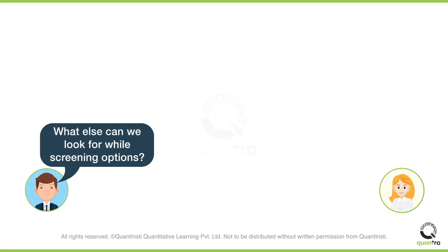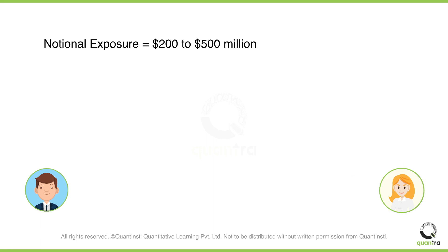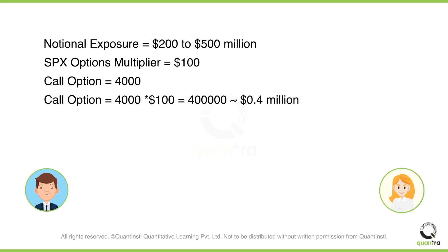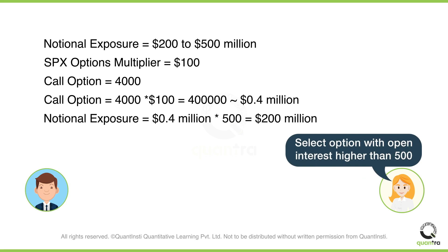You can also look at the options' open interest. Select those options that have notional exposure of above $200 million to $500 million — $200 million is a ballpark estimate, and you can adjust based on your trading strategy. SPX options trade with a multiplier of $100, so if you buy a call option of 4000, you have notional exposure of $0.4 million. If that option has open interest above 500, the notional exposure exceeds $200 million ($0.4 million × 500). By keeping only options with open interest higher than 500, you avoid trading illiquid option contracts.